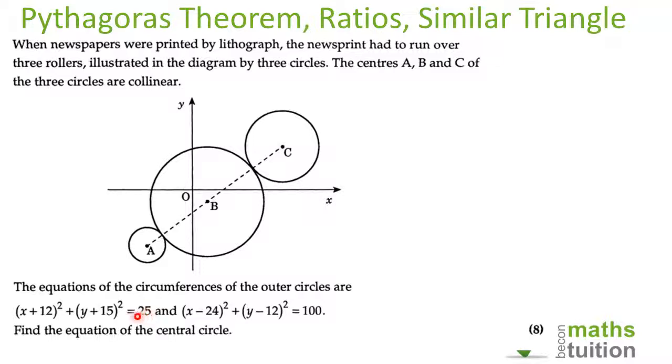Similarly for circle C, this is the equation, the center being (-12, -15) with the radius of the square root of 25 which is 5. Now we need to find the length of CA. To do that we do some construction work.